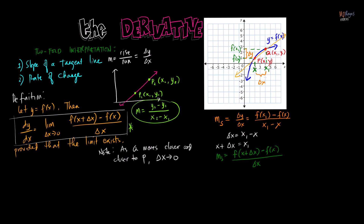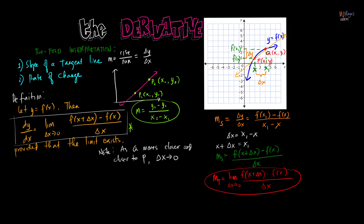As Q goes closer and closer to P, delta x approaches zero. As delta x approaches zero, the secant line becomes a tangent line. So the slope of the tangent line is the limit of the slope of the secant line — that is, f of x plus delta x minus f of x over delta x as delta x approaches zero — which is exactly the definition of the derivative, equal to the slope of the tangent line at point P.